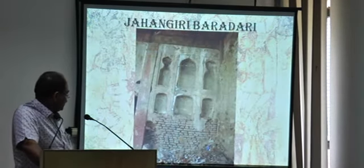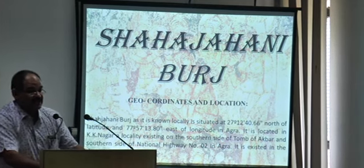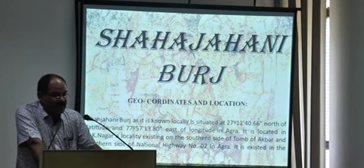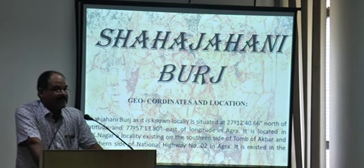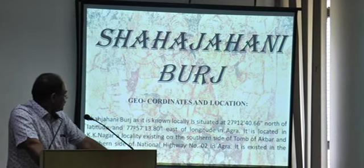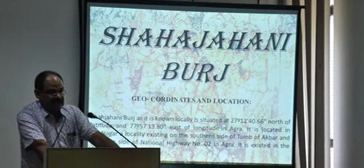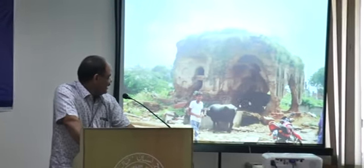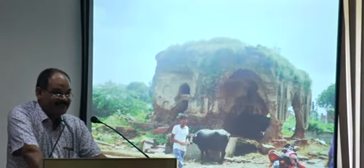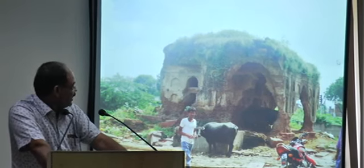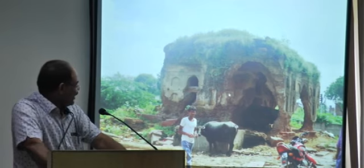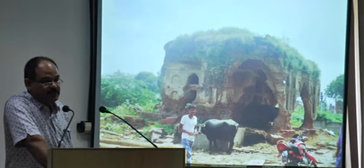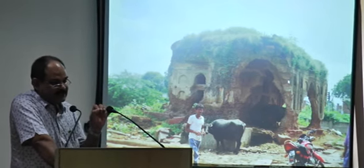The next structure I have chosen for this presentation is the Shahjahani Burj. Again, a structure which cannot be identified because we don't have any epigraphs or references in contemporary sources. This Shahjahani Burj is again existing on the right side of the old Agra-Mathura road, around two kilometers from the southern side of the tomb of Akbar at Sikandara. Currently a dairy is operating inside it, and when I started to take photographs they came and created trouble. But I completed the survey, and to your surprise I dated this structure to the Shahjahani period — purely constructed in the arcuate style.